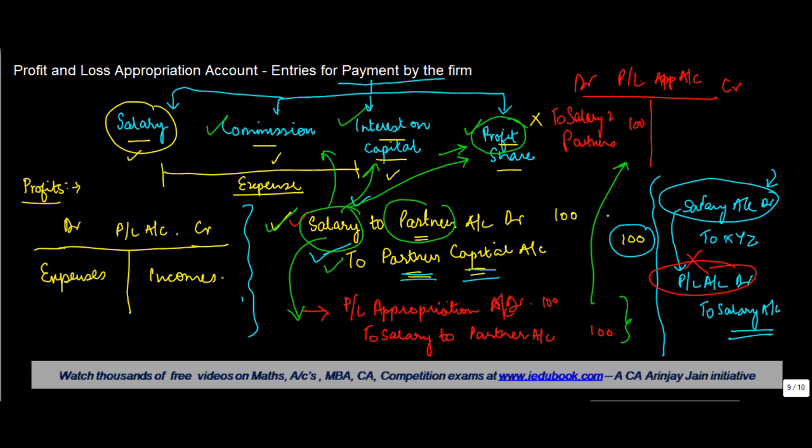So that's basically how the P&L Appropriation Account works for payments made by the firm to the partners.